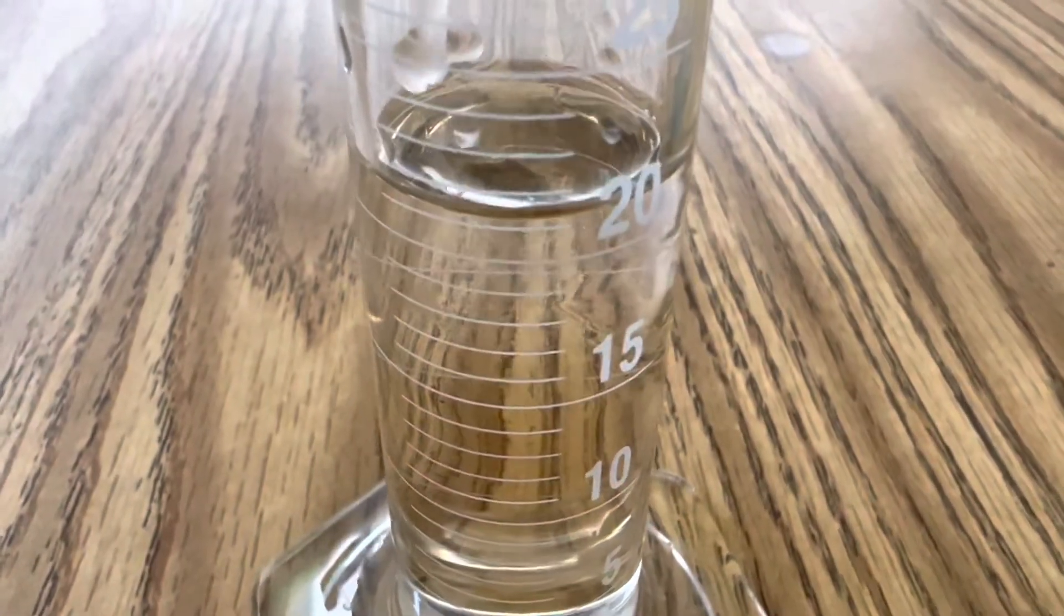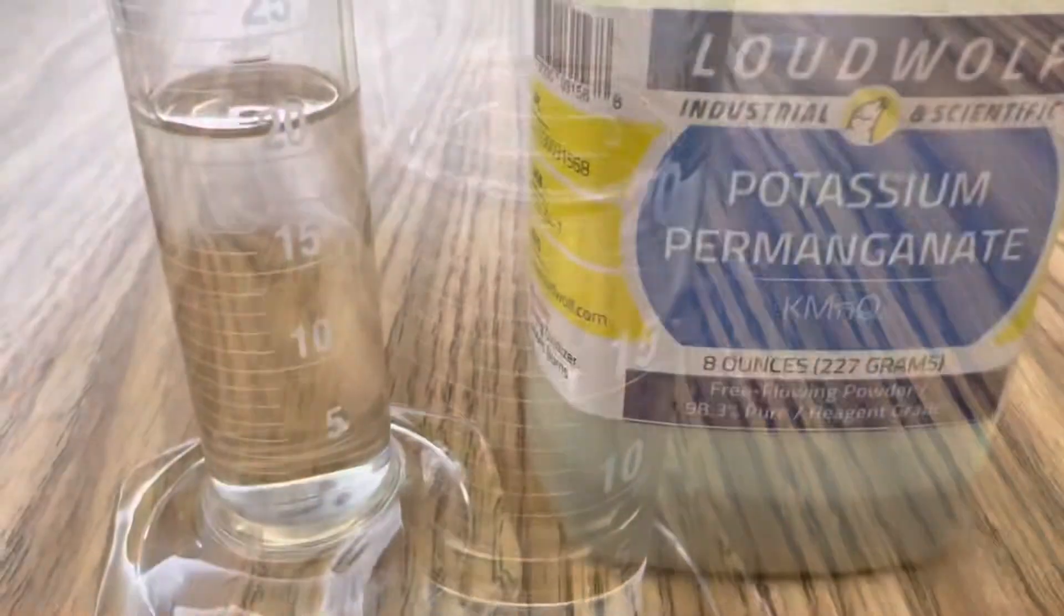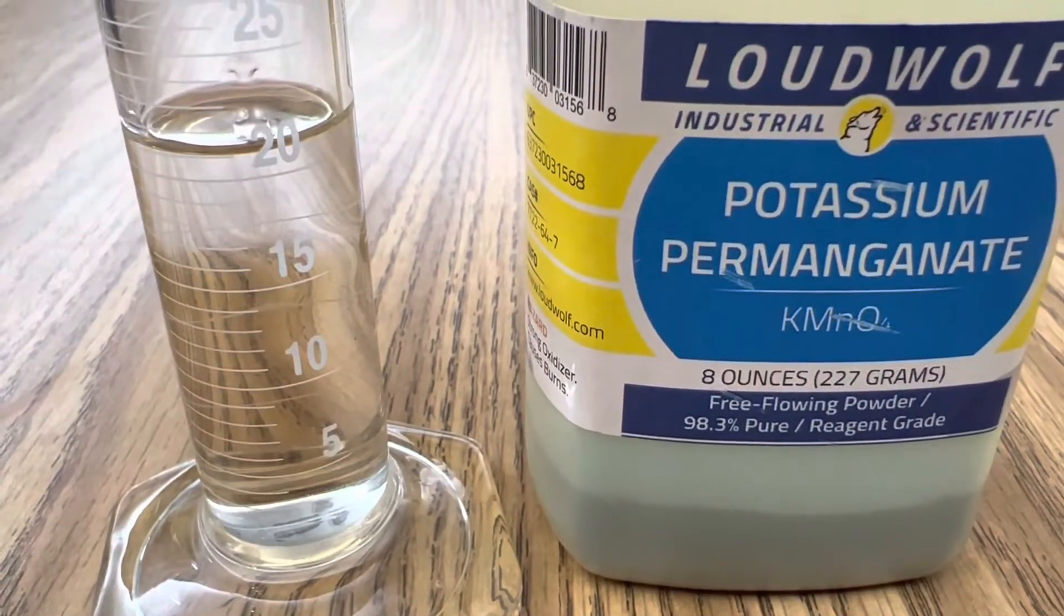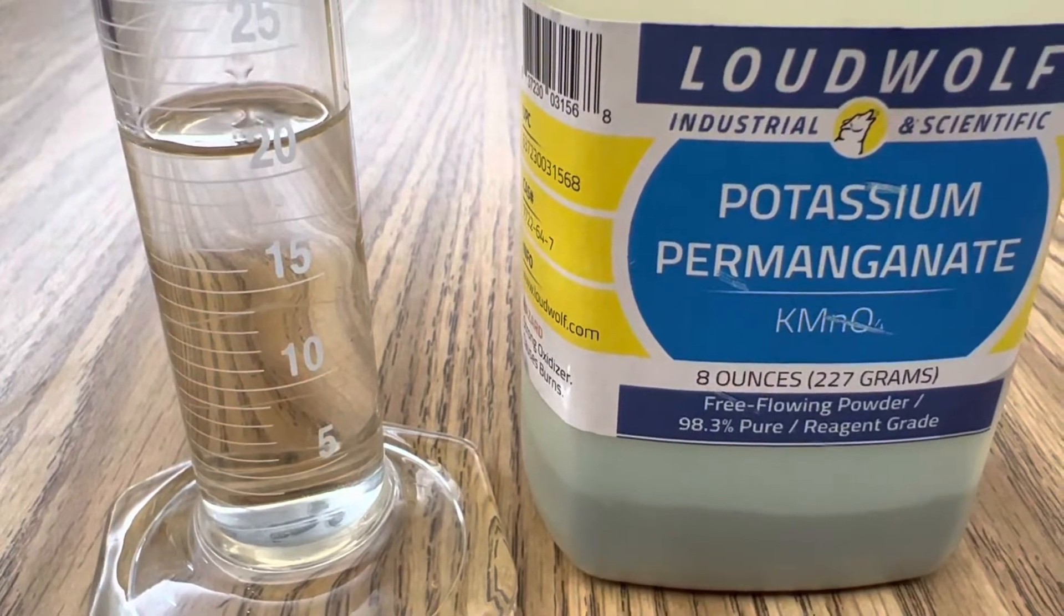At this point, you should be able to see a layer between your sulfuric acid and your isopropyl alcohol. Finally, carefully add 2 to 3 grams of potassium permanganate and observe the reaction.